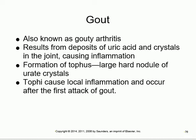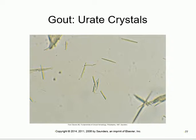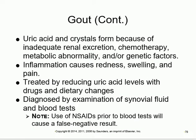The uric acid deposits in joints are called a tophus (plural: tophi) - a nodule of uric acid. Treatment: reduce uric acid levels in the blood and give pain relief. Since it's inflammatory, the joint will be red, swollen, and painful.